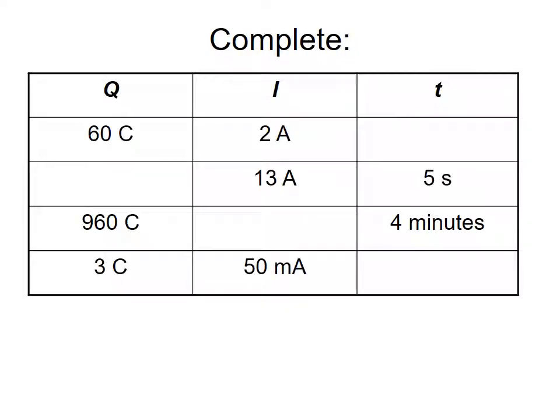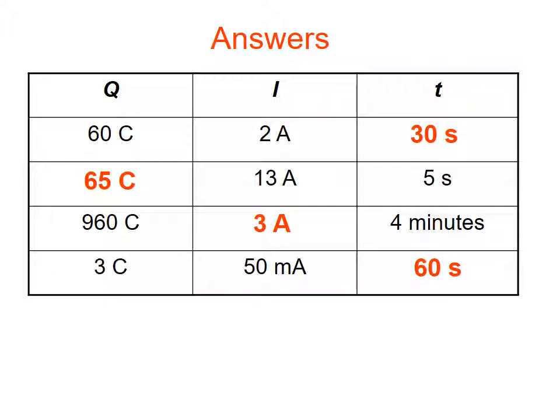Now complete the table. 60 coulombs and 2 amps: time is 30 seconds (60 ÷ 2). Current 13 amps, time 5 seconds: charge is 65 coulombs (13 × 5). 960 coulombs in four minutes: remember to convert minutes to seconds — current is 3 amps (960 ÷ 240). 3 coulombs and 50 milliamps: time is 60 seconds, remembering to convert milliamps to amps. Hopefully you got 100%.